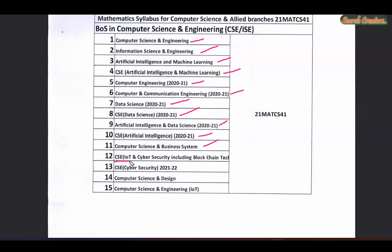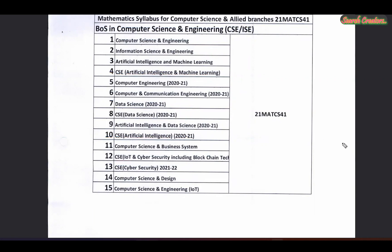The eleventh branch is Computer Science and Business Systems. The twelfth branch is Computer Science and IoT and Cybersecurity including Blockchain Technology. The thirteenth branch is Computer Science and Cybersecurity. The fourteenth branch is Computer Science and Design.